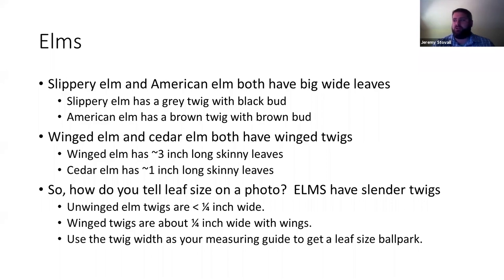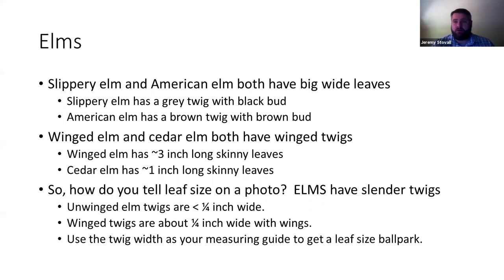The wings on the twigs can cue you in that you've got one of them. To tell a three-inch long leaf from a one-inch long leaf on a photo, compare it to the twig size. All these elms are going to have zigzag slender twigs, less than a quarter inch wide typically even with wings. Just look at the twig and the leaf on that same photo. If the twig looks really big relative to the leaf, it's because the leaf is small — that's cedar elm. If the winged twig looks pretty small compared to the leaf, that's probably winged elm.